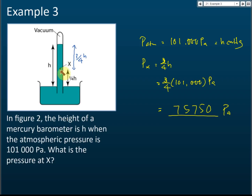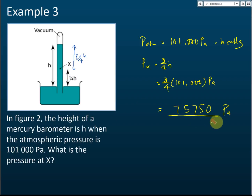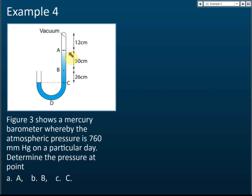Three-quarters h, where h is 101,000 pascal, gives the pressure at x as 75,750 pascal. This next question is more or less the same but uses a J-tube to confuse you — the idea is still the same.